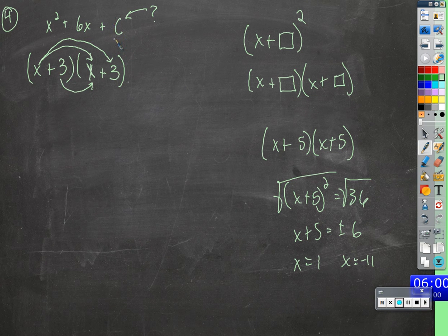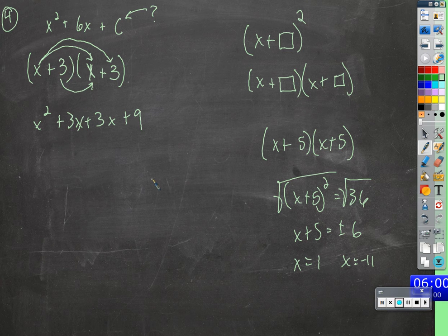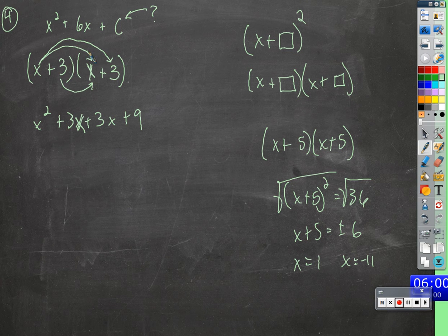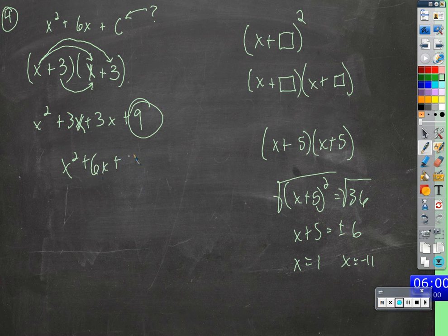Now that we know that, what will c have to be? We'll get the x squared, we'll get the 3x, we'll get plus another 3x, and we'll get 9. So whatever that number is, it would just have to be half of whatever this coefficient is. Our job here is to figure out what c was — 9 is what c needs to be. We get x squared plus 6x plus 9, so c is 9.